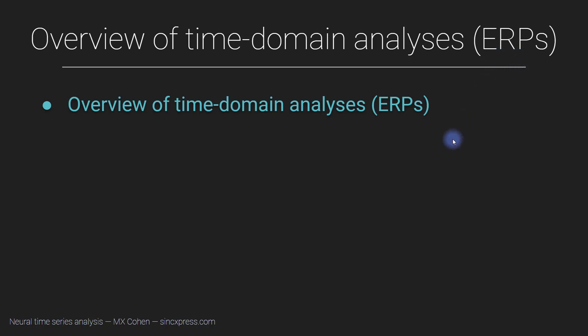The ERP is a commonly used analysis method in the literature, but I'm not really going to talk about it in this course except for this one lecture. And that's for a couple of reasons. Mathematically, the analysis of an event-related potential is really simple. I will explain the entire analysis procedure in one slide.